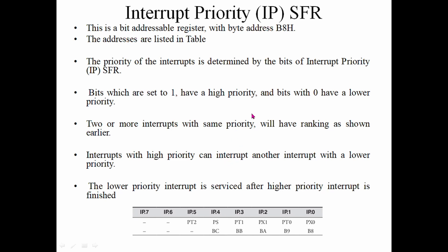We have a priority register called IP — the Interrupt Priority Register. There are 7 or 6 usable bits. If a bit in IP is set to 1, that interrupt has higher priority. The priority of each interrupt is determined by its corresponding IP bit.